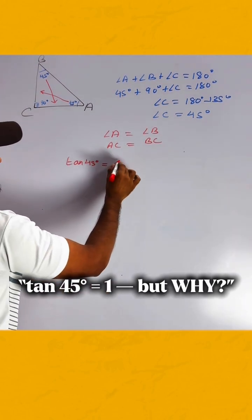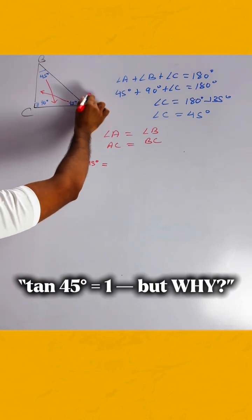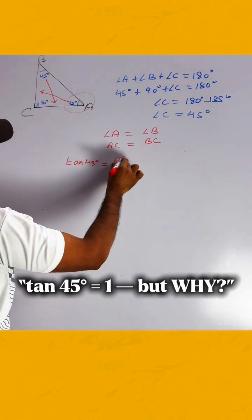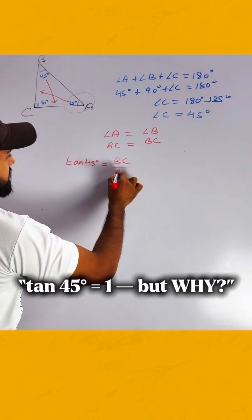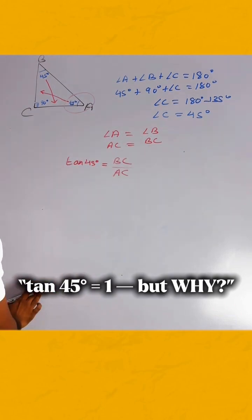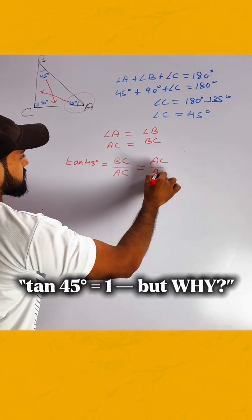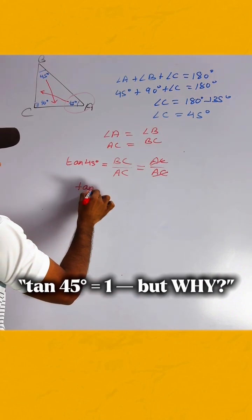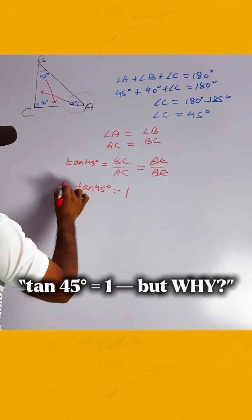Then for the 45-degree angles, the perpendicular (BC) and the base (AC) are equal. BC and AC are both equal, so BC upon AC equals 1. Therefore, tan 45 degrees equals 1.